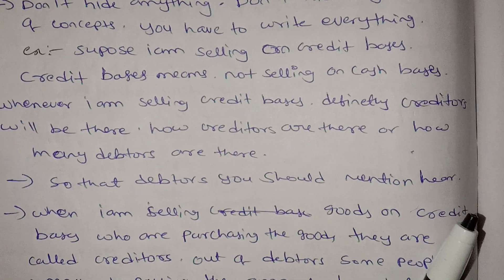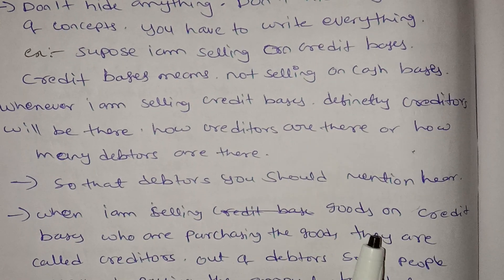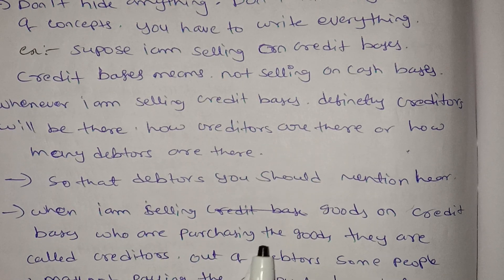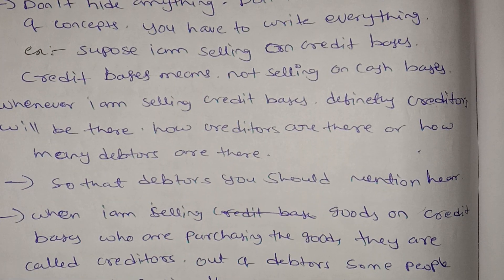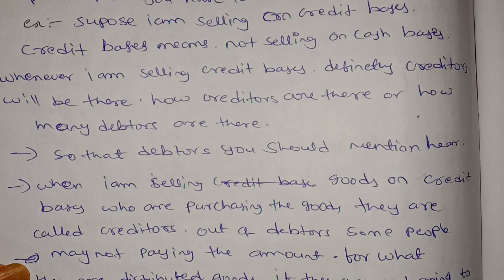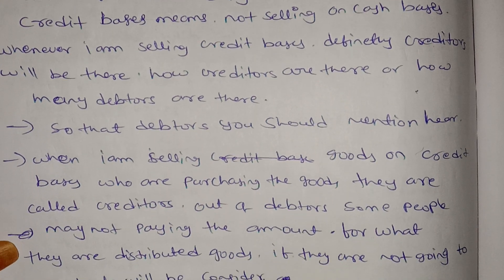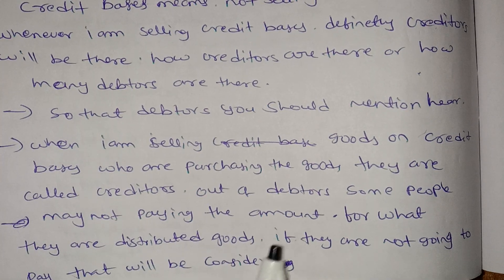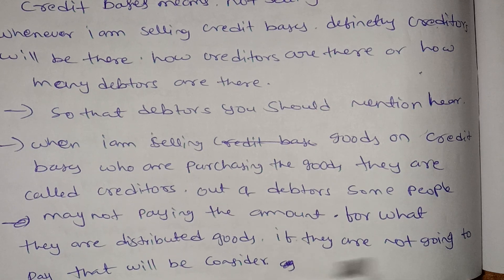Debtors — you should mention them. When I am selling goods on a credit basis, the people who are purchasing the goods are called creditors. Whenever I am selling goods, some people may not pay the amount, and some people may pay the amount for the goods distributed to them.